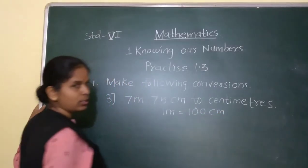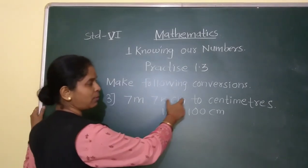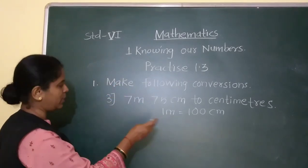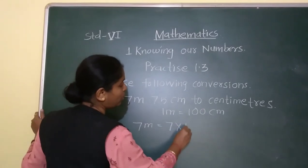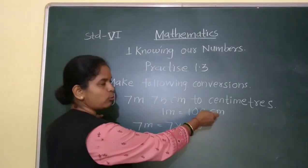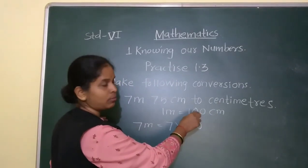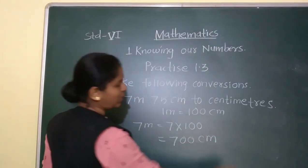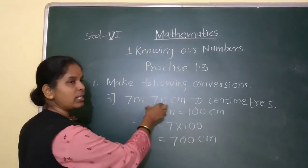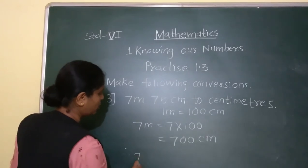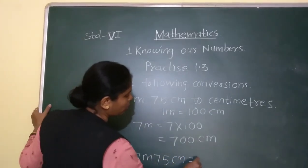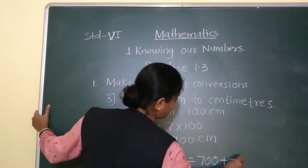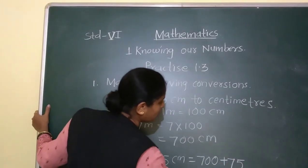Third: to convert 7 metres 75 centimetres into centimetres. First, convert 7 metres into centimetres. 7 metres multiplied by 100 equals 700 centimetres. Then add the 75 centimetres. Therefore, 7 metres 75 centimetres equals 700 plus 75, which is 775 centimetres.